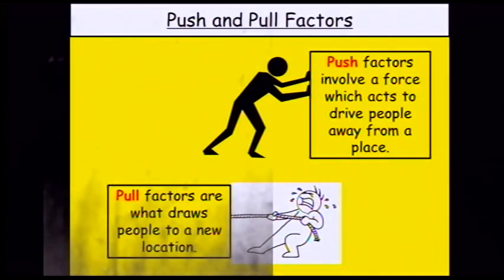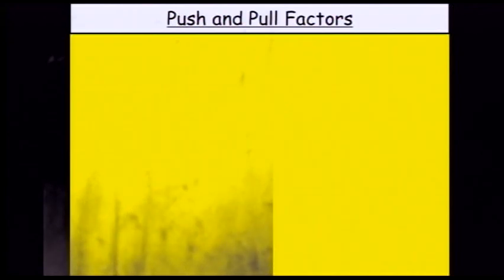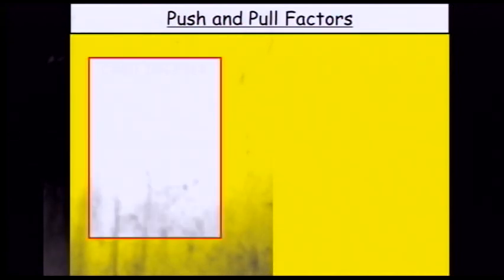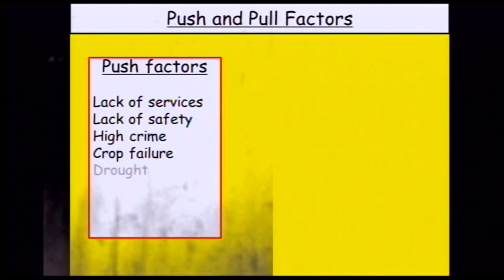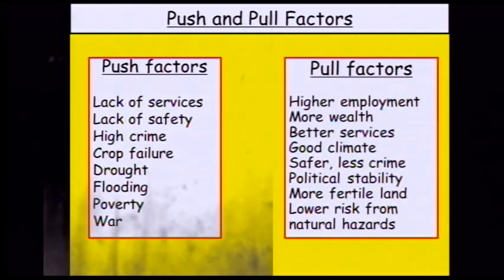There are push and pull factors of migration. Push factors involve a force that pushes people out of an area — generally negative things like lack of services, lack of safety, high crime rates, crop failure, drought, flooding, poverty and war. Pull factors are things that pull people into an area — higher employment, more wealth, better services, good climate, safety and less crime, political stability, more fertile land, and lower risk from natural hazards.